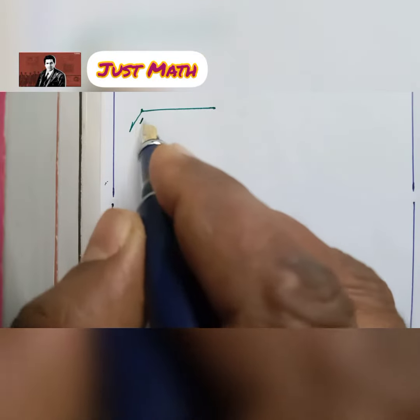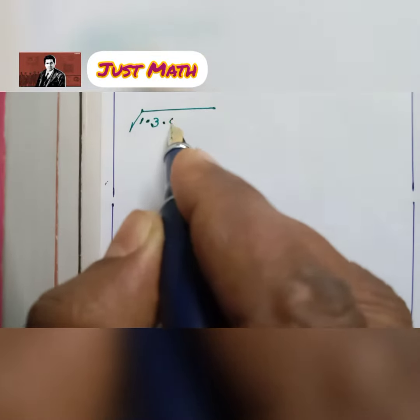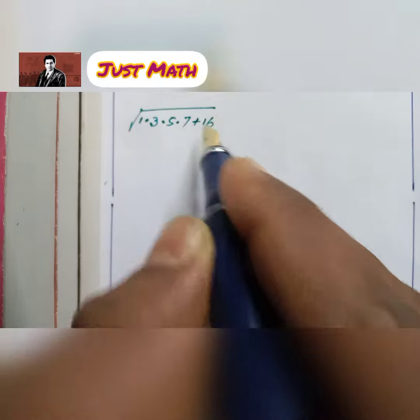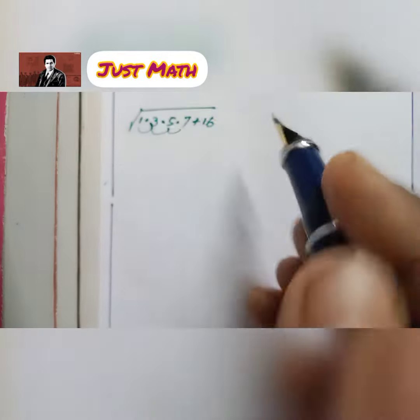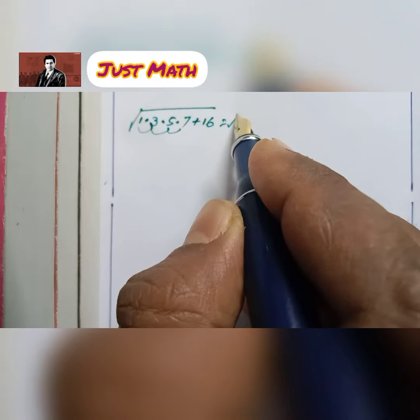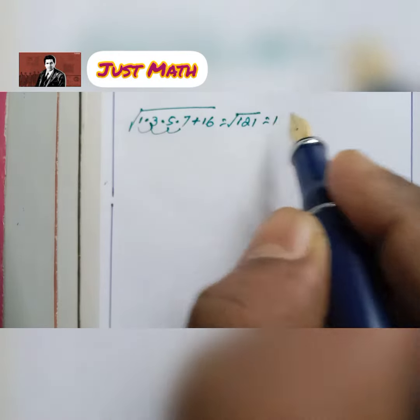Square root of 1 × 3 × 5 × 7 plus 16. Difference is 2, 2, 2, 2 equals to 121 which is 11.